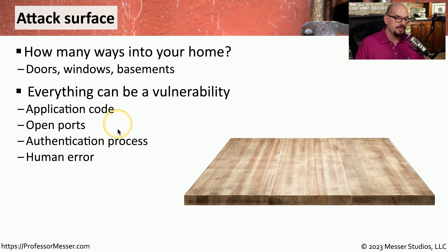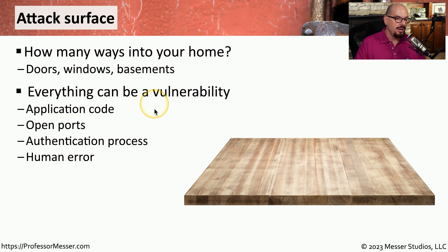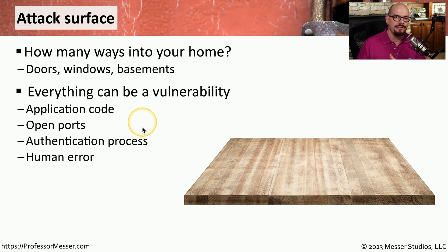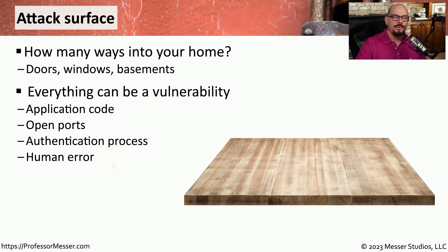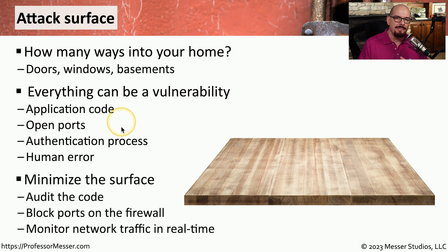In our network, they could get in through application code, an open port that might be in a server, the authentication process itself, or simply human error. We could work very hard to make sure that we've patched all of our applications and closed any open ports that are unnecessary on our servers. But if we've got one firewall rule that we've accidentally configured improperly, that human error could result in someone gaining access to our network. We refer to this combination of potential openings of our network as the attack surface, and our goal is to minimize the size of the possible attack surface.